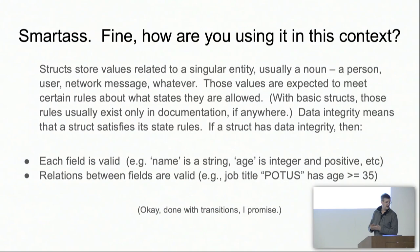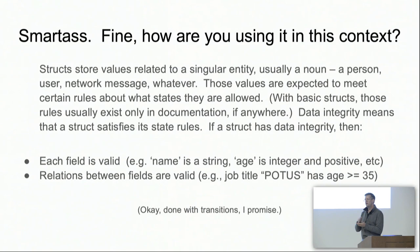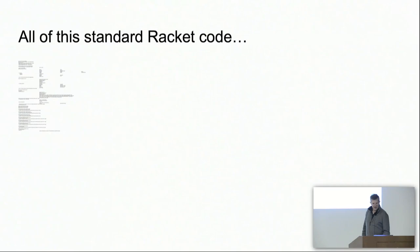A struct has data integrity when all of its field rules are satisfied — for example, the username is a string, the age is an integer and positive — and all of the internal between-fields relationships are satisfied. So if the job title field in the struct says 'President of the United States,' then the age field must have a number greater than 35, assuming we're measuring in years.